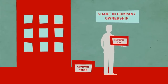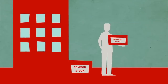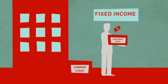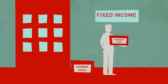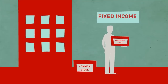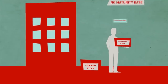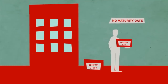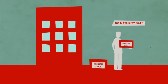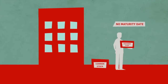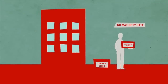Rather, like debt securities or bonds, preferred stock is similar to a fixed income investment as the company pays these shareholders a fixed dividend. However, unlike bonds, preferred stocks do not have a maturity date or set point at which the principal amount is returned.